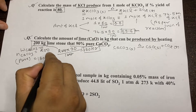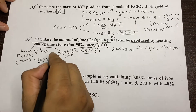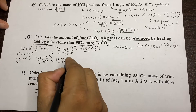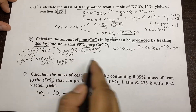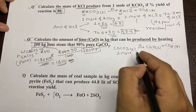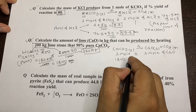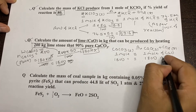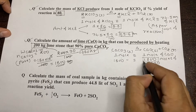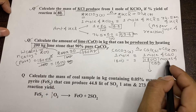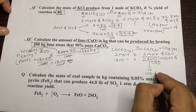The moles of pure CaCO₃ equals 180 × 10³ grams divided by 100 (molecular mass of CaCO₃), giving 1800 moles. Since one mole of CaCO₃ produces one mole of CaO, 1800 moles of CaCO₃ produces 1800 moles of CaO. Multiplying 1800 moles by the molecular mass gives the mass in kg — approximately 100.8 kg.